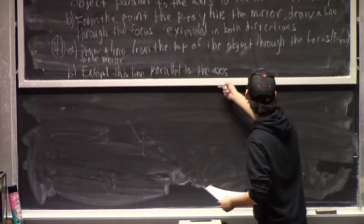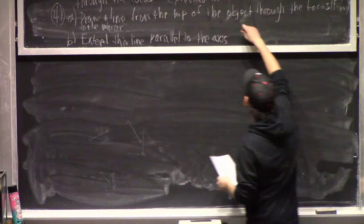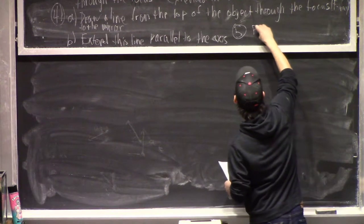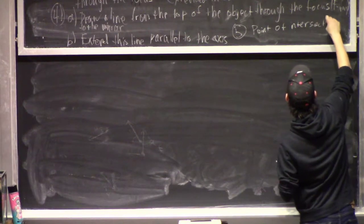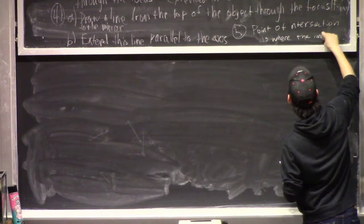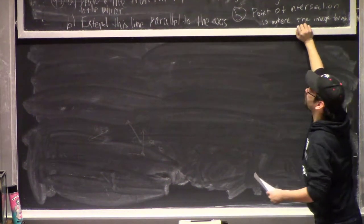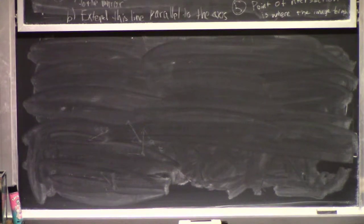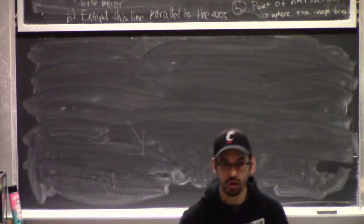All of these lines are going to intersect at some point — the point of intersection is where the image forms. I'm going to leave this up for reference, do an example for you, and then I have a worksheet that will take you through a whole bunch of different arrangements of where the object can start and where the images will form.